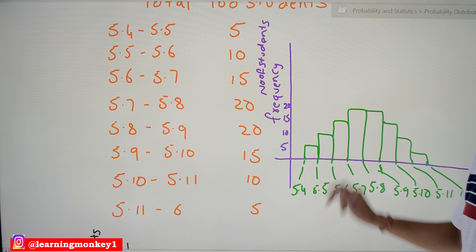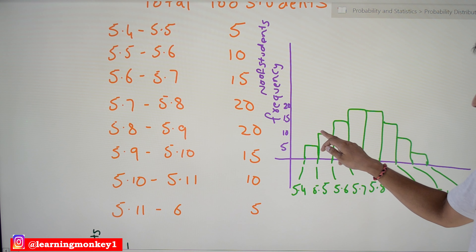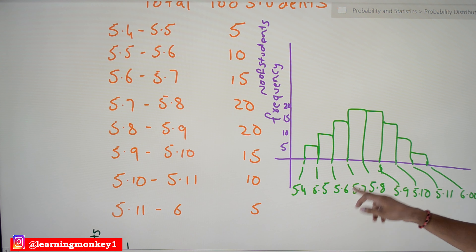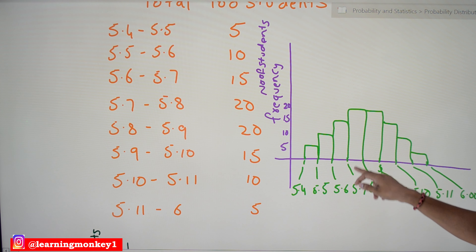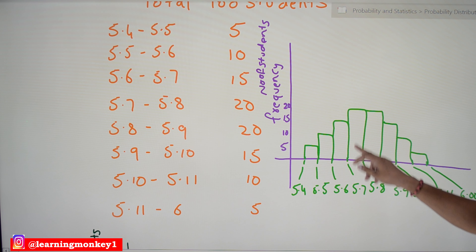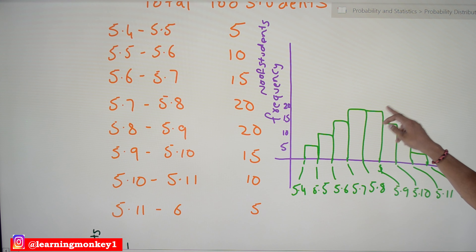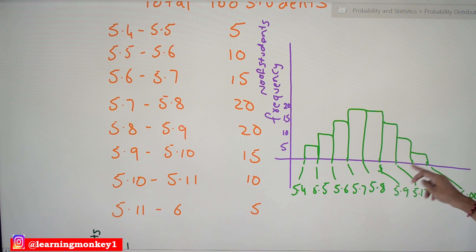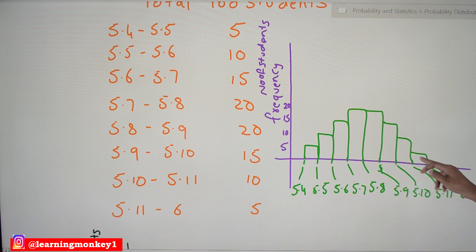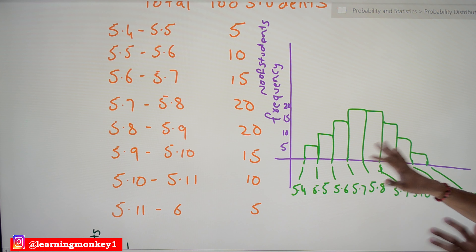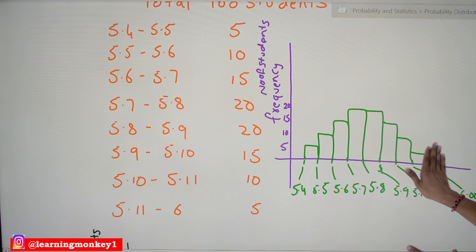So plotting the full data: 5.4 to 5.5 — 5 students; 5.5 to 5.6 — 10 students; 5.6 to 5.7 — 15 students; 5.7 to 5.8 — 20 students; 5.8 to 5.9 — 20 students; 5.9 to 6.0 — 15 students; then 10 students, then 5 students up to 6 feet total. If the data is distributed like this, we can proceed.